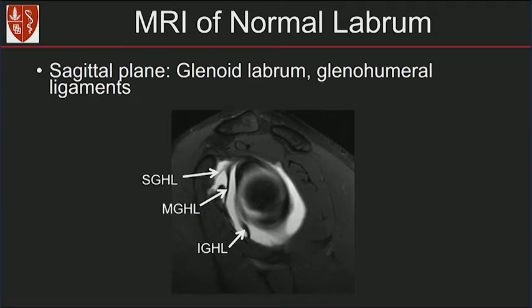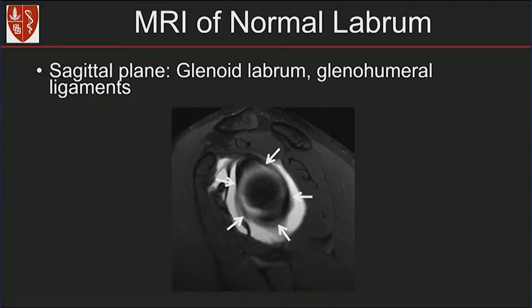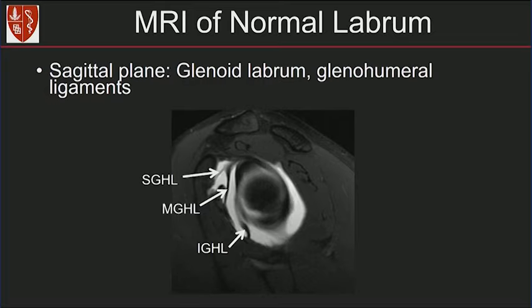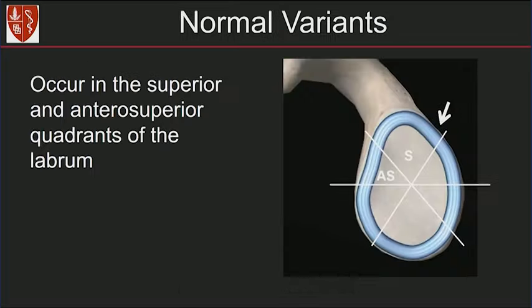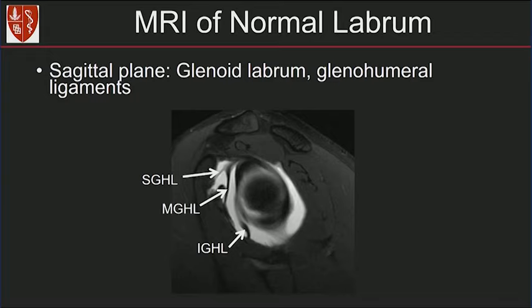On the sagittal plane, we can evaluate the entire glenoid labrum in its entirety. We can also see the glenohumeral ligaments — here you see the superior, middle, and inferior glenohumeral ligaments.